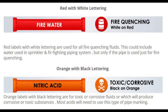Orange with black lettering: Orange labels with black lettering are for toxic or corrosive fluids, or fluids which will produce corrosive or toxic substances. Most acids will need to use this type of pipe marking.